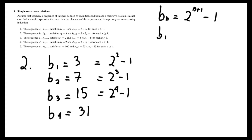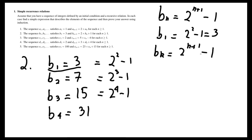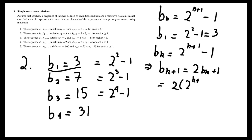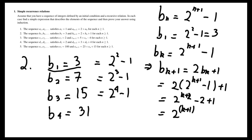For the base case, b1 is equal to 2 squared minus 1, which is equal to 3 — and we have that. If we assume that in general bₖ is equal to 2 to the k plus 1 minus 1, then that implies that bₖ₊₁, using the recurrence, is equal to 2 times bₖ plus 1, which is equal to 2 times (2 to the k plus 1 minus 1) plus 1, which is 2 to the k plus 2 minus 1. This satisfies the equation and shows that the induction is correct.